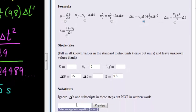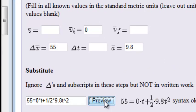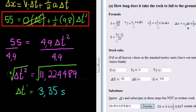Now, ignoring deltas, we are going to use our formula that we have here. But in this formula, we are also going to substitute the values that are known. We know delta x, for example, so that's going to be 55 equals zero times time plus one-half times acceleration is 9.8 multiplied by time squared. Preview, and that looks correct for my substitution step.